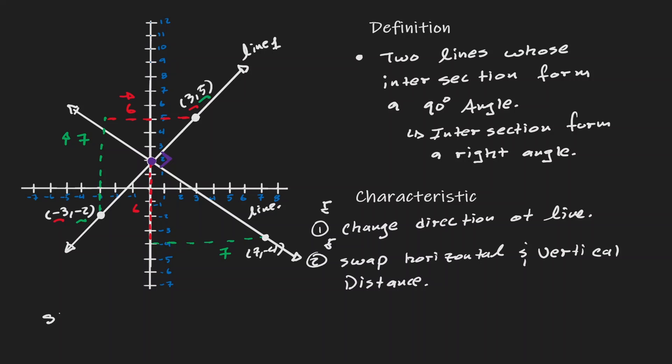Let's look at the slopes. The slope of line 1 was 7 over 6. And the slope of line 2, notice that we move vertically down, so that's negative 6 over 7.